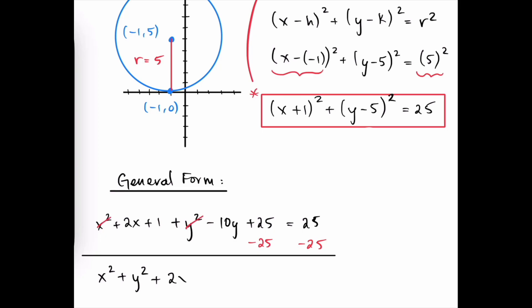And follow that by the linear terms, or the variables raised to the first power. Then 25 minus 25 is 0. And the only constant that remains on the left-hand side is 1. And we're equal to 0 on the right.